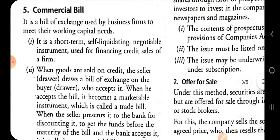The fifth instrument is the commercial bill, which is a bill of exchange used by business firms to meet their working capital needs. It is just like a bill of exchange drawn by the drawer on goods sold on credit, which the drawee accepts. The drawer then discounts the bill from the bank; thereafter the bill of exchange becomes a commercial bill, through which companies arrange short term funds from banks before the maturity period.